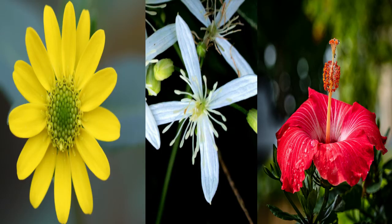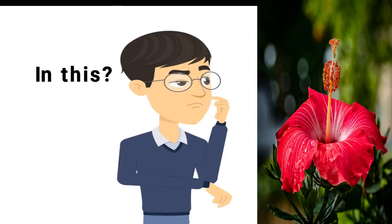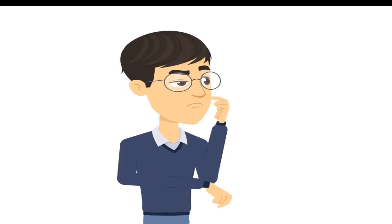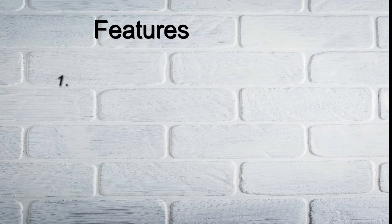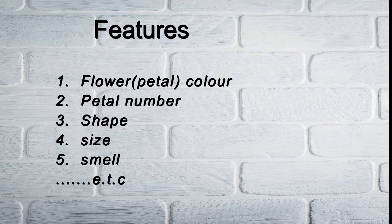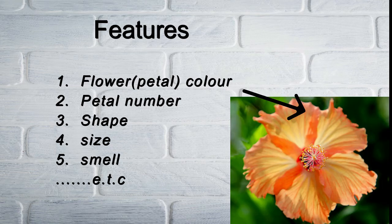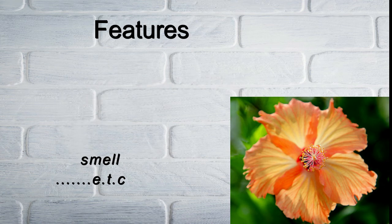On the left, on the middle, on the right. Did you see anything in this one? There were a few features: the flower or the petal color, the petal number, the shape, the size. The smell you may not observe, but it may also be different. Look at the picture — you can see the beautiful flower and its own peculiarities.